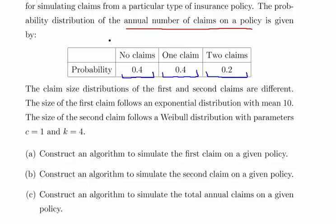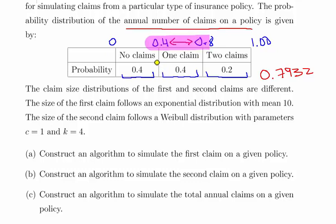Just as a quick remark, if we were to come up with a way of generating using the uniform distribution a particular probability, we might use the cumulative totals. Starting from the left hand side: 0 to 0.4, 0.8, and then 1.00. So if we generated a number like 0.7932, that would be in the range 0.4 to 0.8, and we would be simulating an outcome where there was one claim.